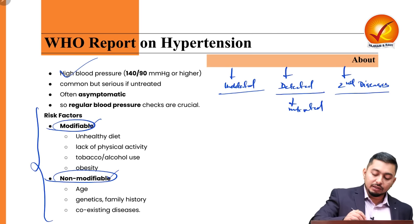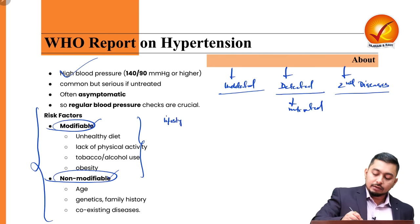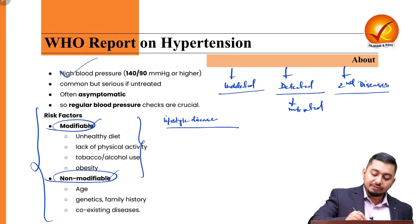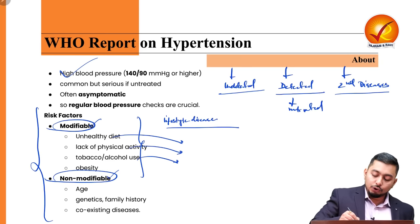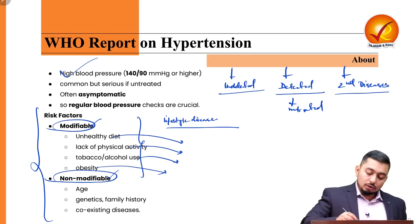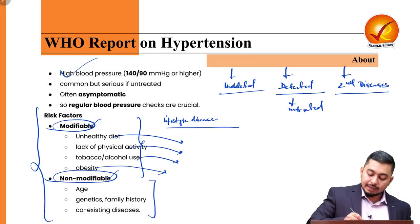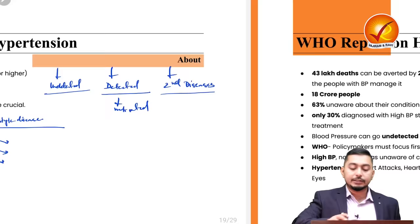Risk factors are divided into modifiable and non-modifiable. Modifiable factors refer to lifestyle-related issues — unhealthy diet, lack of physical activity, tobacco use, alcohol use, and obesity. Non-modifiable factors include age, genetics, and coexisting diseases or comorbidities.